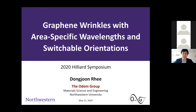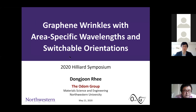Hi, my name is Dong-Joon Ri. I'm a 6th year PhD student in the Odom Group. Today I'm going to present my work on creating multi-scale graphene rainbows with area-specific wavelengths and switchable orientation.